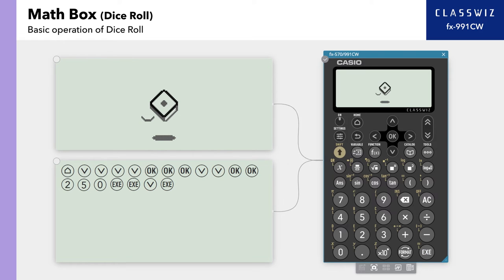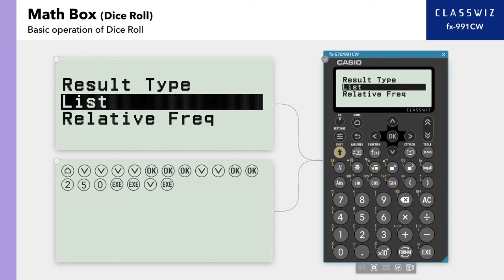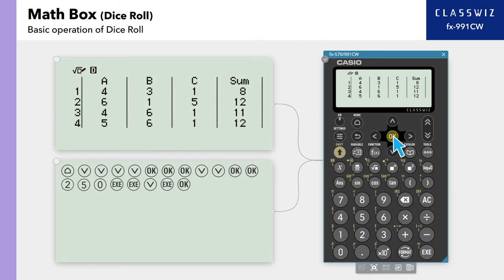After a dice roll animation, the results are displayed. There are two types of results. Select List. This screen shows each dice,